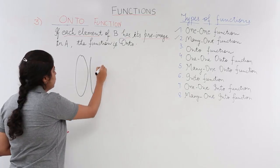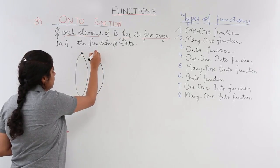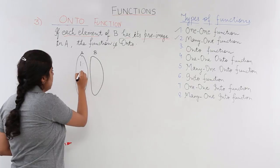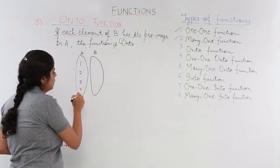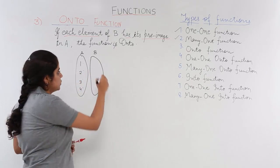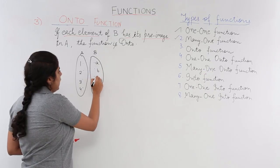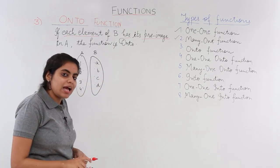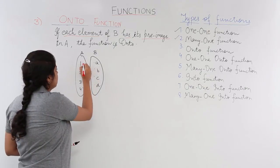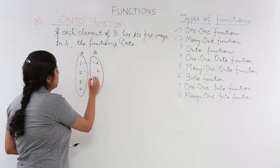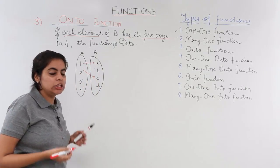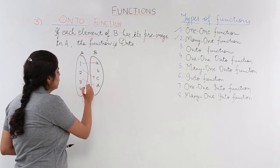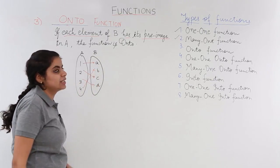Let's say we have two sets A and B. Set A has elements 1, 2, 3, 4 and set B has elements A, B, C, D. A relationship is given such that 1 is related to A, 2 is related to C, 3 is related to D, and 4 is related to B.